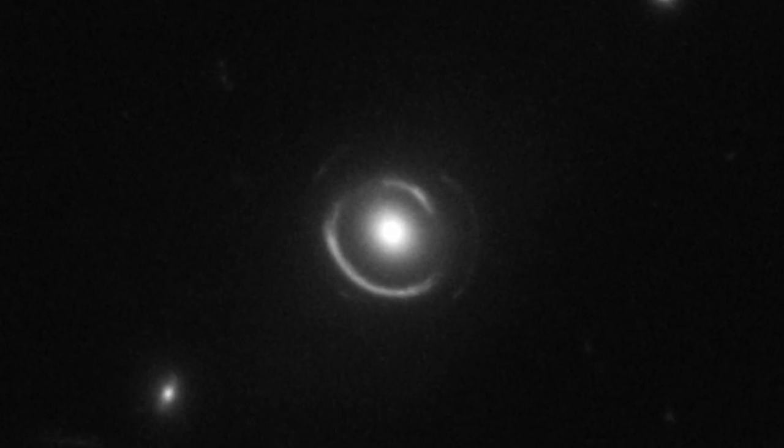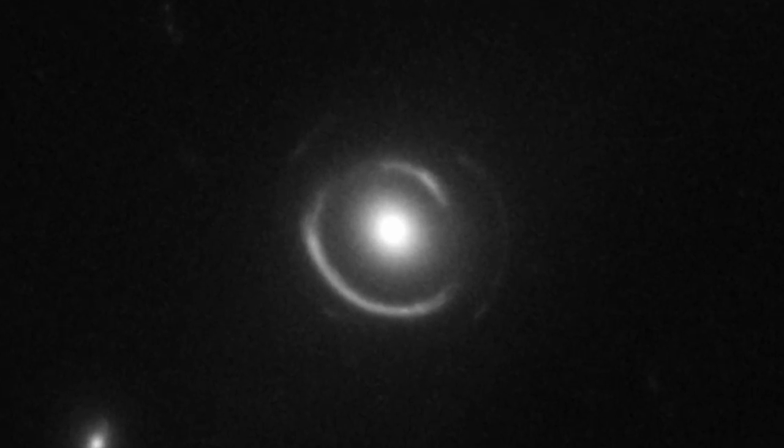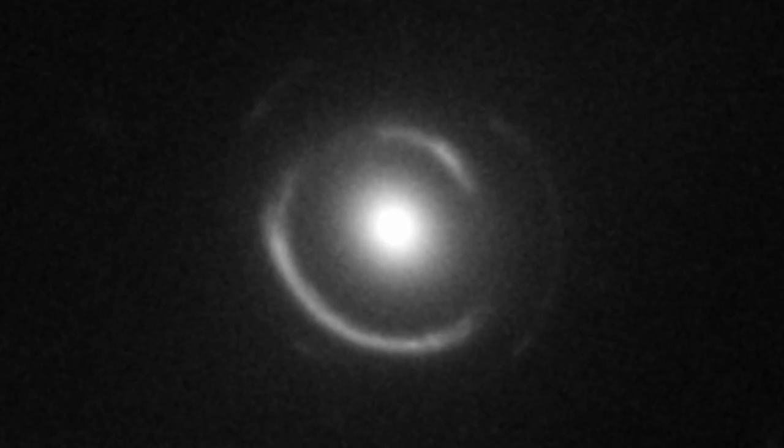A few years ago, Hubble observed an even rarer cosmic coincidence - an incredible double ring where Hubble can see the light from not one but two galaxies perfectly aligned behind a closer galaxy.